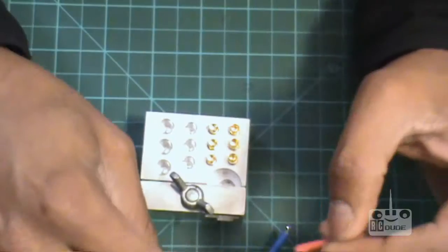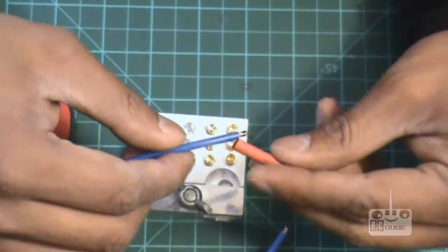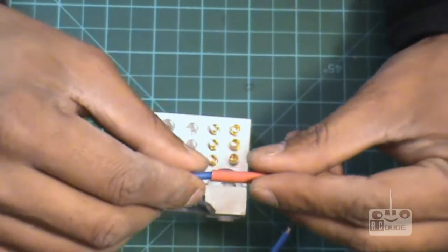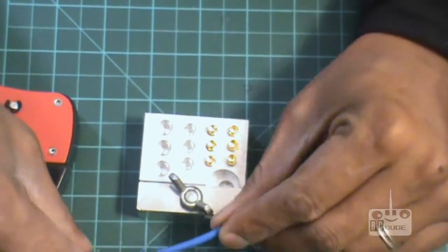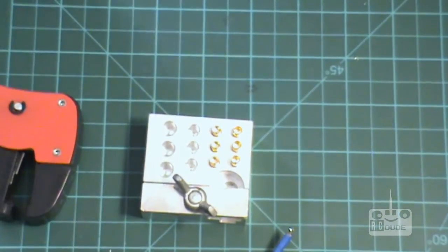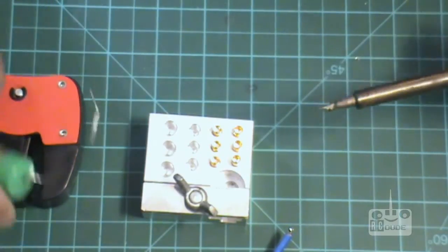Always remember, I'll put the heat shrink chart for you guys at the bottom so you don't get any issues. Now take your soldering iron again.